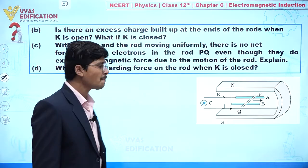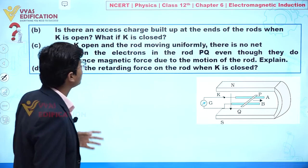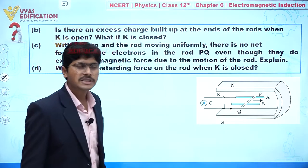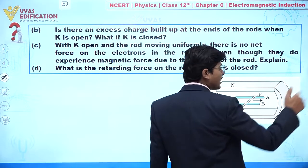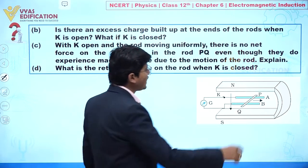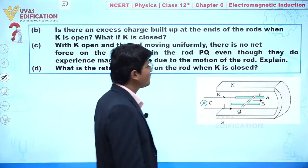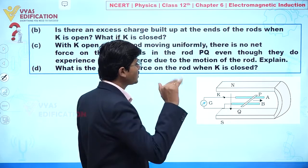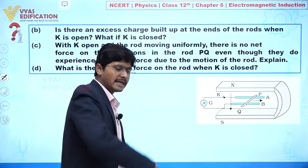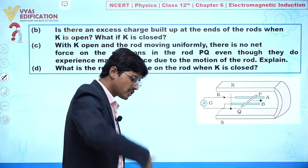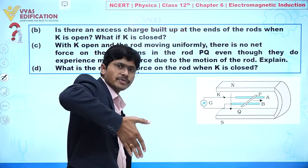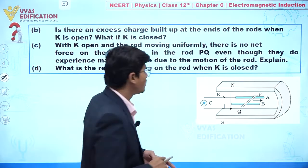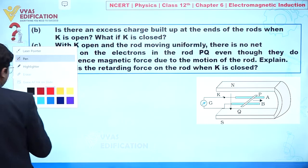In part (b), it is asked: is there an excess charge build-up at the ends of the rod when the key is open? When the key is open, no current flows, but as the rod moves in the magnetic field, we can determine which end is at higher potential. Using the right-hand palm rule — fingers represent the direction of the magnetic field and the thumb indicates the direction of motion — the inward perpendicular direction shows the direction of higher potential.